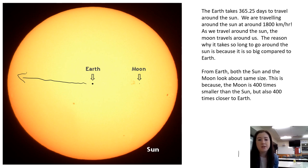As we travel around the sun, the moon travels around us. The moon, which is that tiny, tiny dot there, travels around us and it just loops and loops around us as we loop around the sun. The reason why it takes so long to go around the sun is because it is so big compared to Earth. This is actually a to-scale model. The sun is huge compared to Earth. The moon is even smaller. The reason why from Earth they look the same size is because the moon is about 400 times smaller than the sun but also 400 times closer to Earth.